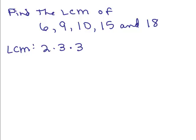I want the factors of 10 also to be in there. I need 2 times 5, so I've got to put in a 5. For 15, I need a 3 times 5 — check it out, I already have it. And for 18, well, 18 is 2 times 9, so I need a 2 times a 3 times a 3 — check it out, I've already got it. So I didn't have to throw in any more factors for 15 or 18. We simply multiply those together and we get 90. That's the least common multiple of 6, 9, 10, 15, and 18.